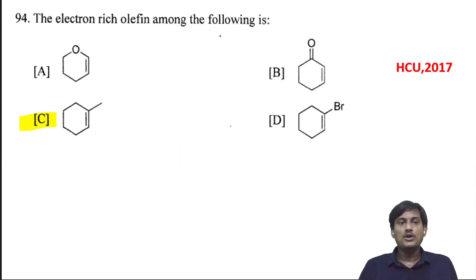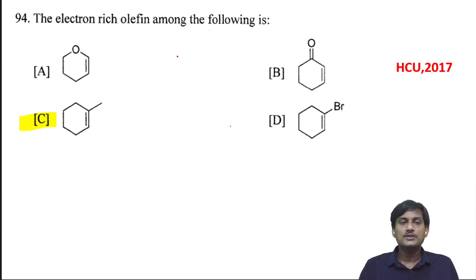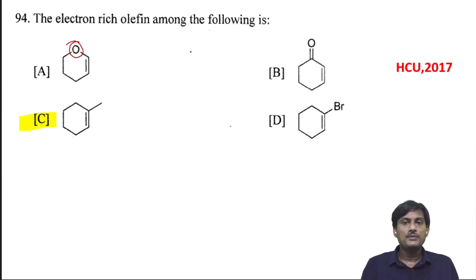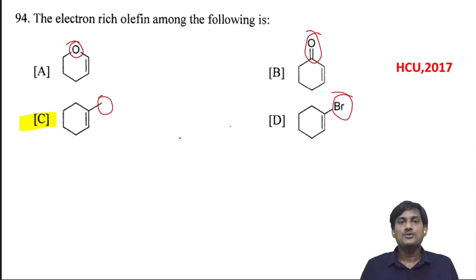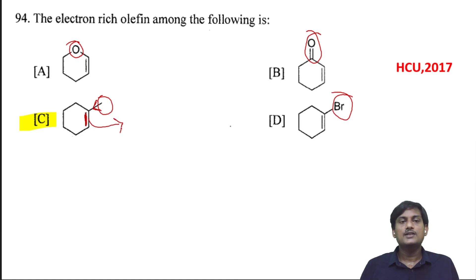The electron-rich alkyne among the following groups: as electron releasing groups increase, electron richness of the alkyne increases; as electron withdrawing groups increase, electron richness decreases. Some compounds have electron withdrawing groups, one has zero electron withdrawing groups, and one has an electron releasing group, which increases the electron density in the alkyne region. So the electron-rich alkyne corresponds to option C.